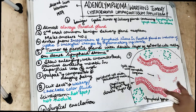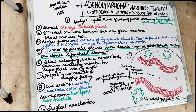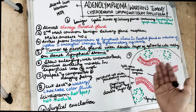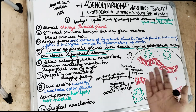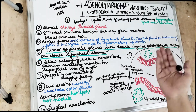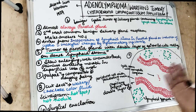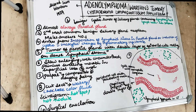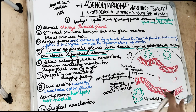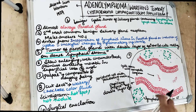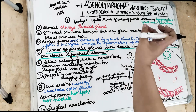Between the two epithelial layers there is a cystic space containing an eosinophilic coagulum. In the connective tissue, there are lymphocyte aggregates as the name 'adenolymphoma' or 'cystadenoma lymphomatosum' suggests. There is going to be lymphocytes and a lymph node-like stroma in the connective tissue — with lymphoid aggregates similar to those present in lymph nodes. So there will be lymphoid aggregates in the connective tissue of adenolymphoma.